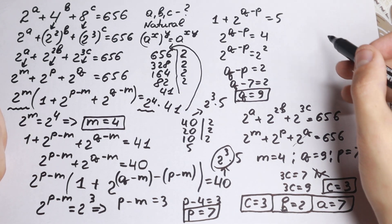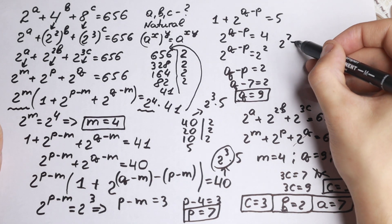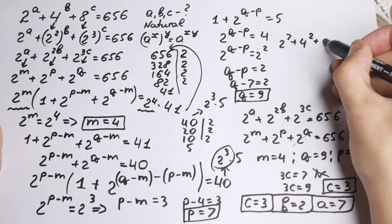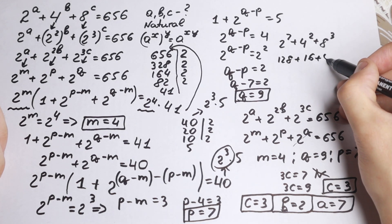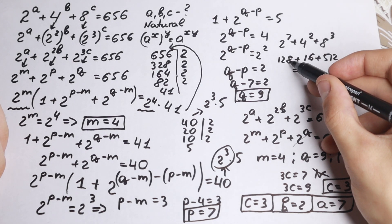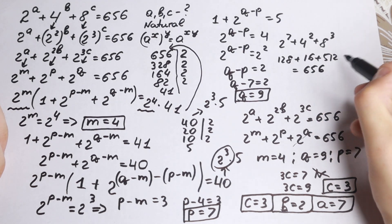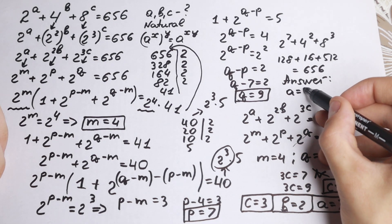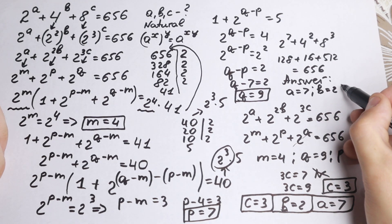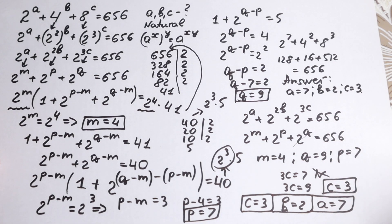Let's verify: 2 to the 7th plus 4 squared plus 8 cubed equals 128 plus 16 plus 512, which equals 656. Correct! So our answer is a equals 7, b equals 2, and c equals 3. Thank you so much for watching and see you in the next videos. Have a great day!